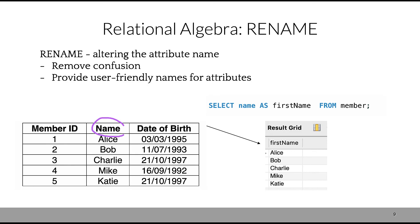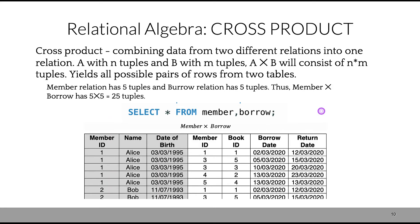Cross product is our next component. We're combining data from two different relations into just one relation. Look at this table, for instance. We combine two tables: 'member' and 'borrow.' Our table one, or A, with a certain number of tuples, let's say n, and the second table had, let's say, m tuples. So in total, as a result, we have n multiplied by m. Since the 'member' relation had five tuples and the 'borrow' relation had five tuples, the result is 25. We end up having a table with 25 records. The way to do it is we just select all attributes from both tables, 'member' and 'borrow.'